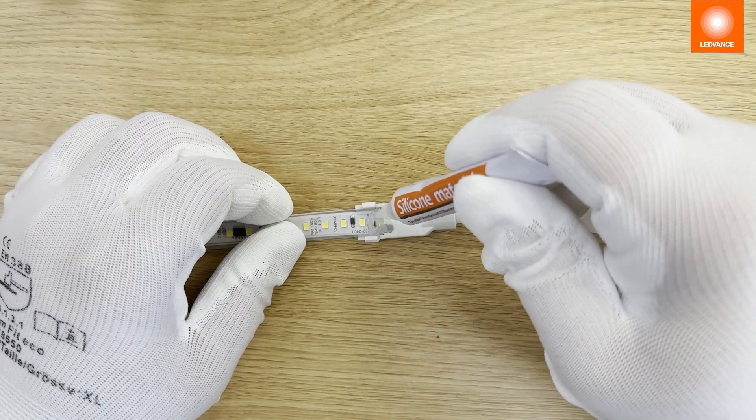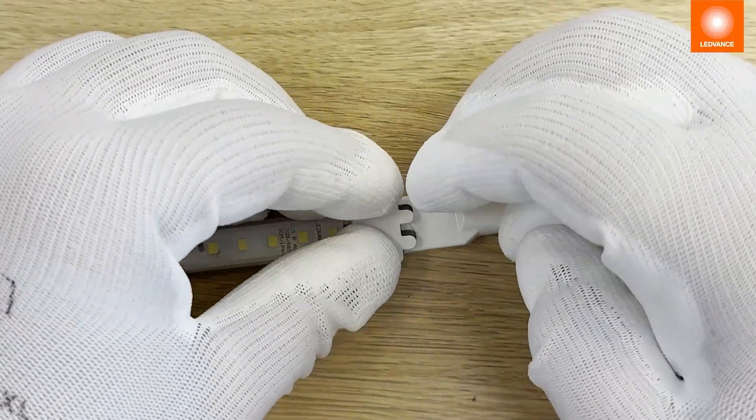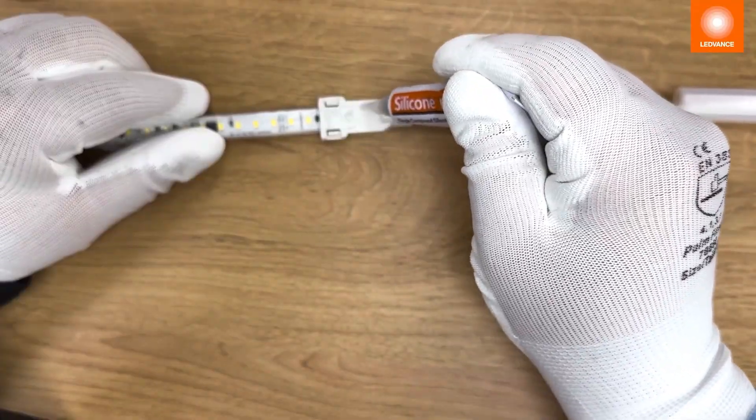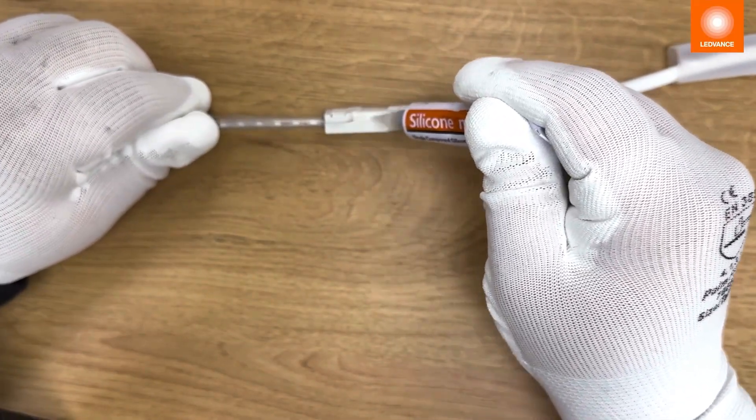Apply the silicone glue and press the cover on. Apply the silicone glue a second time and pull the protective silicone sleeve over it.